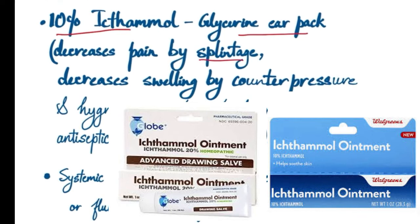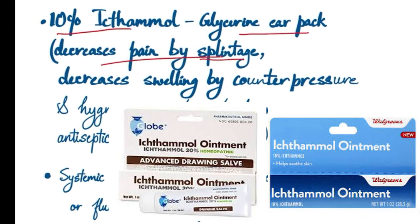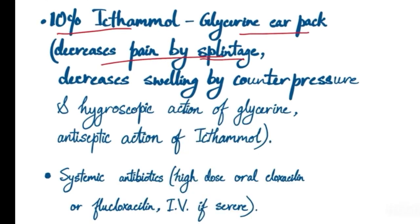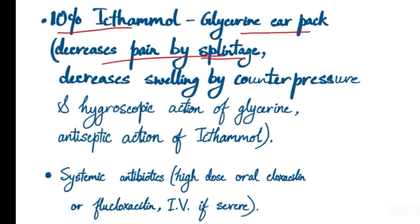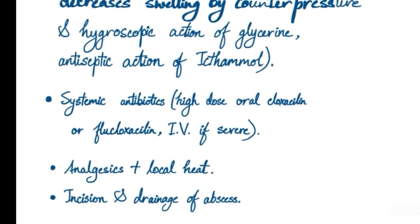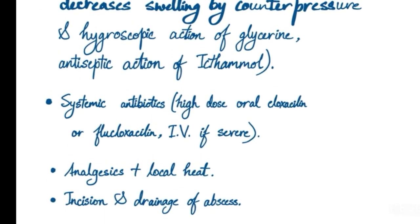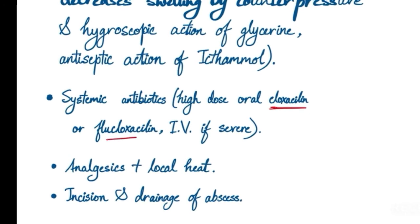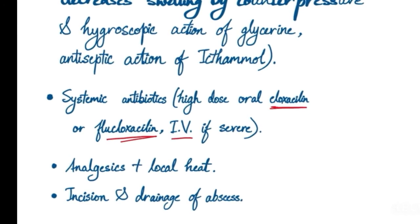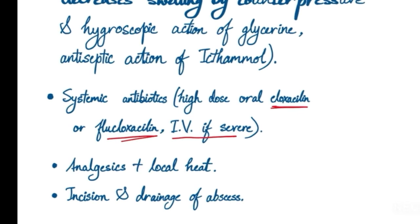Treatment involves a 10% ichthammol glycerine ear pack, which decreases pain by acting as a splint, reduces swelling by counter-pressure and the hygroscopic action of glycerine, and also has antiseptic action from ichthammol. Systemic antibiotics are used — high dose oral cloxacillin or flucloxacillin, or intravenous if the condition is severe.